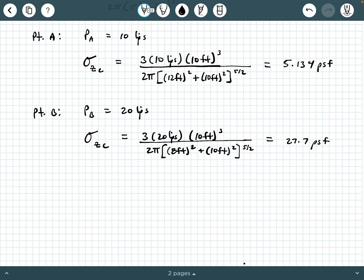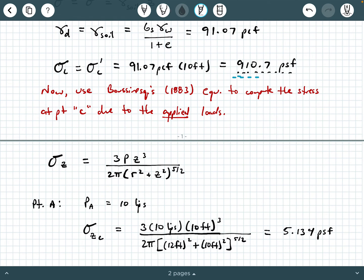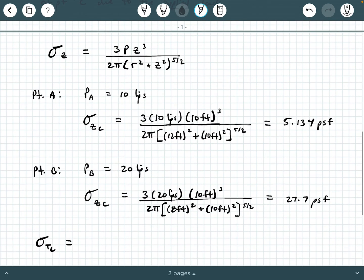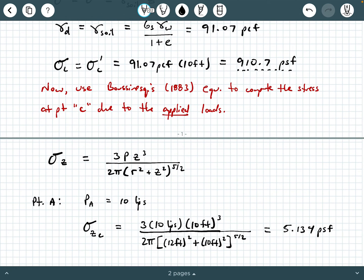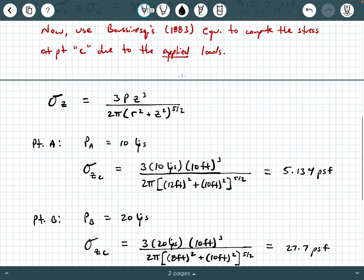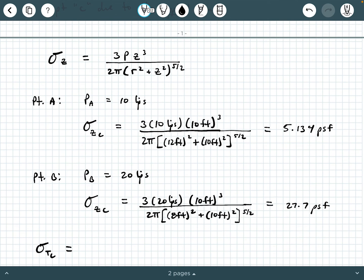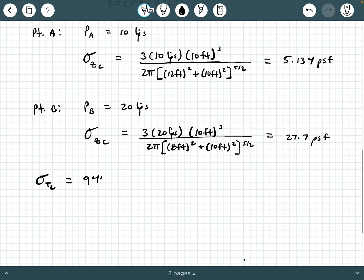So finally, the total stress at point C is going to be the sum of these three stresses we computed already, the stress due to the soil above it, the stress due to point A applied at the ground surface, and the stress due to the load at point B at the ground surface. So if we add those three values up, I'm going to pull out my TI 36X calculator, I'm going to say 910.7 plus 5.134 plus 27.7. And I get about 944 PSF as my final answer.